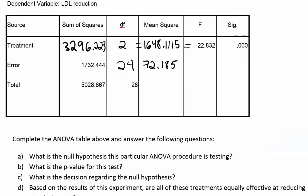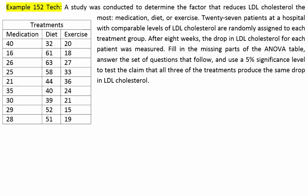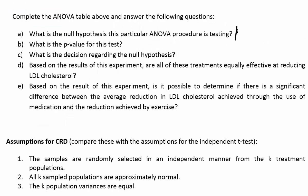Now let's look at part A: what is the null hypothesis for this ANOVA procedure? There are three treatment means connected to medication, diet, and exercise. The null hypothesis is simply that the mean for medication equals the mean for diet equals the mean for exercise — all three treatment means are equal to one another.